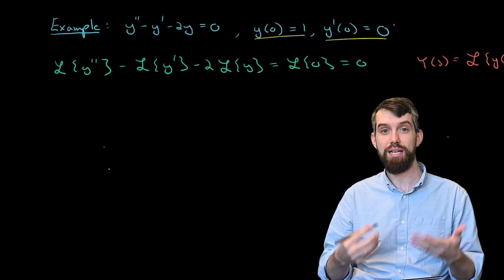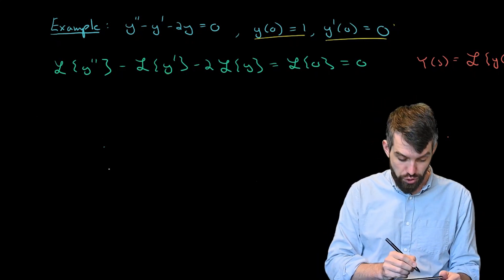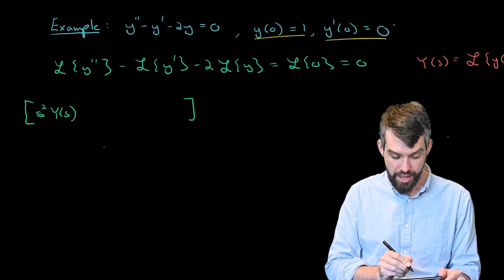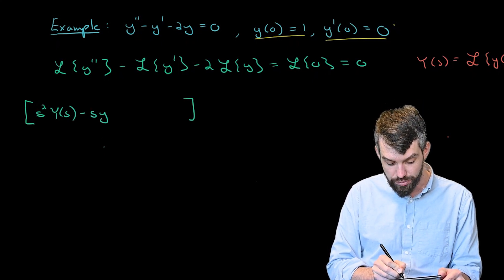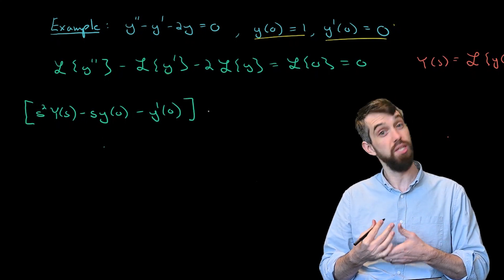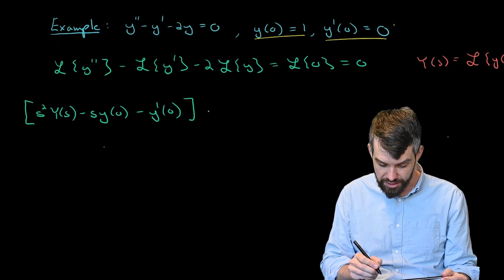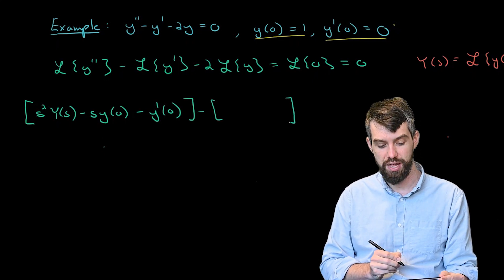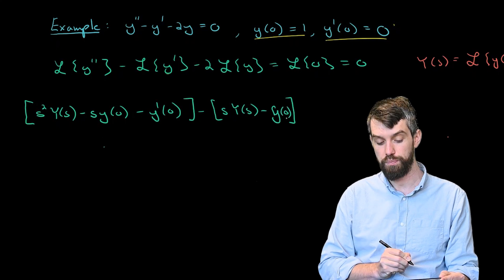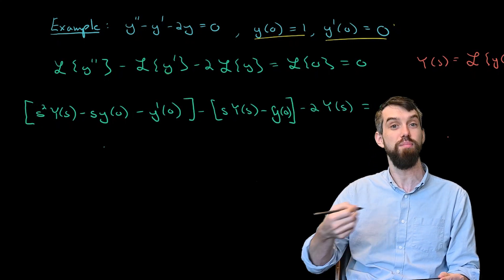Now I need the Laplace transform of the first and second derivatives — computed in a previous video. The Laplace transform of y double prime is s² Y(s) − s·y(0) − y'(0). The Laplace transform of y prime is s·Y(s) − y(0). And the Laplace transform of y is just capital Y(s). Putting it all together and subtracting twice the last term, the right-hand side is 0.